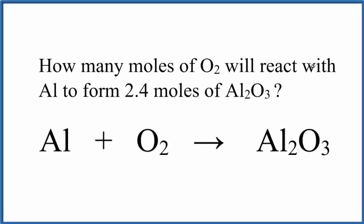Okay, Dr. B here. We're going to figure out how many moles of O2 oxygen gas will react with Al to form 2.4 moles of aluminum oxide. So moles of oxygen, we don't know that right now, but we do know that we have 2.4 moles of this aluminum oxide here.